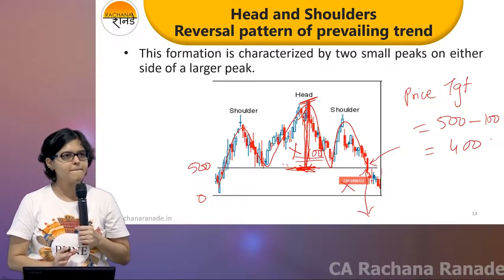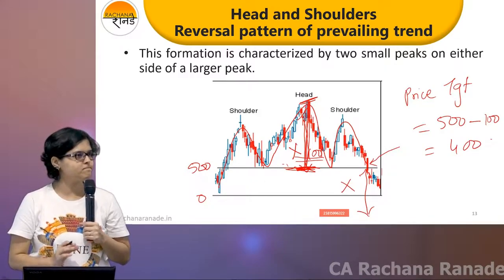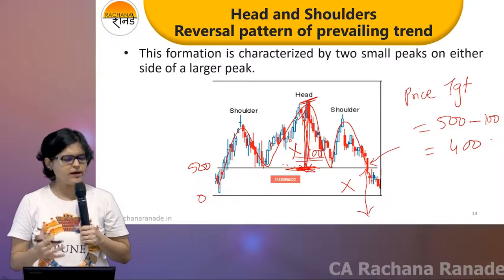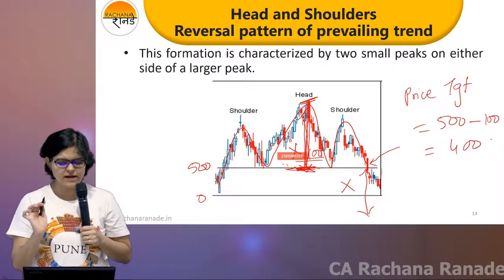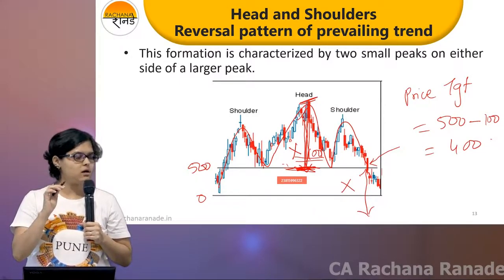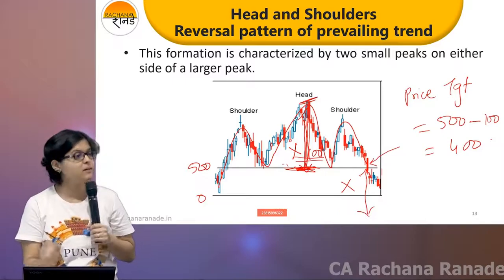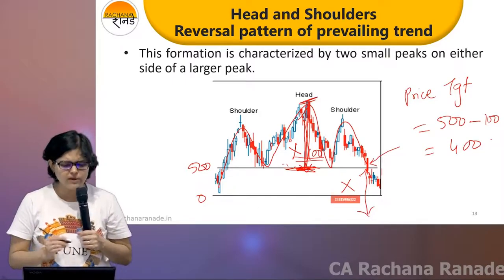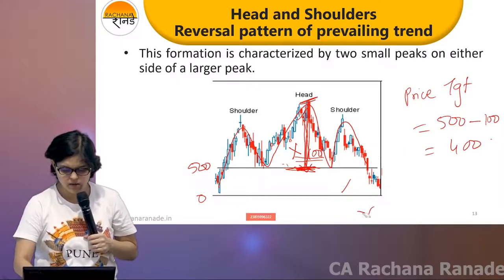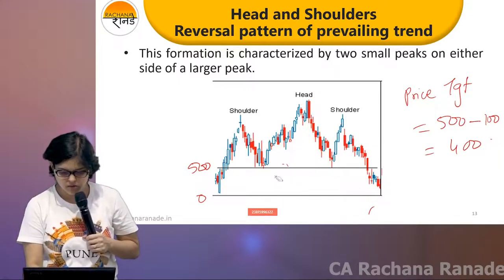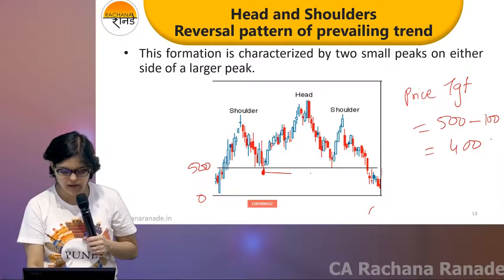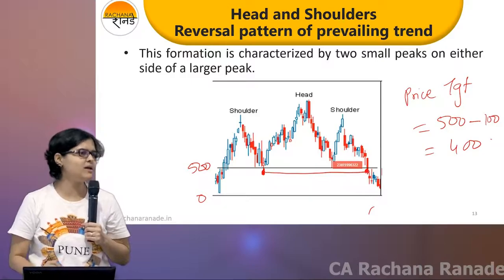Is this okay? Everyone absolutely clear with this? Price target will be neckline minus X. And what will be the time target? First shoulder's end from here till the breakout candle, divided by 3.